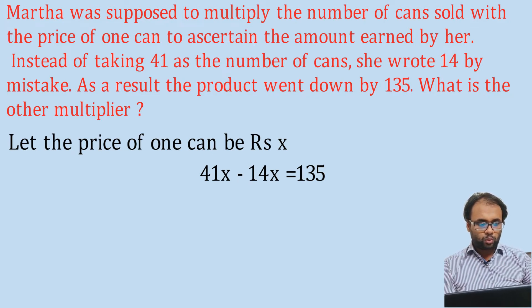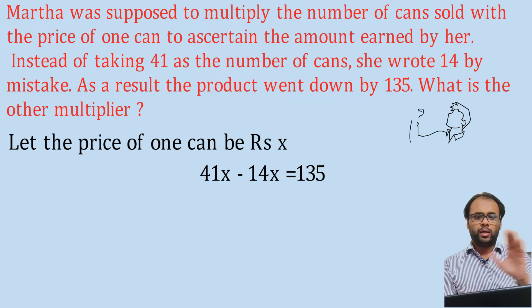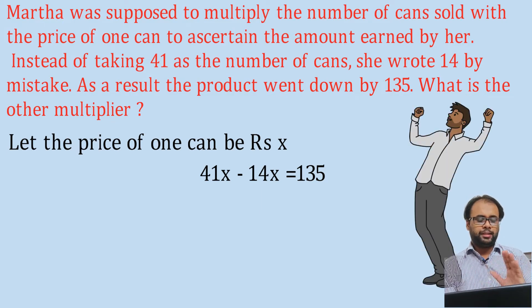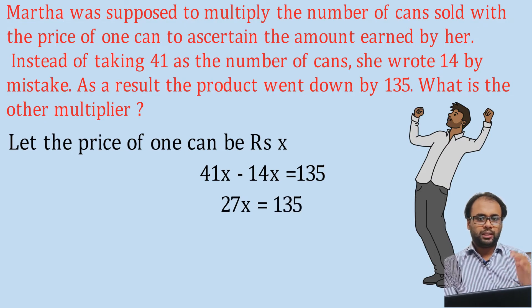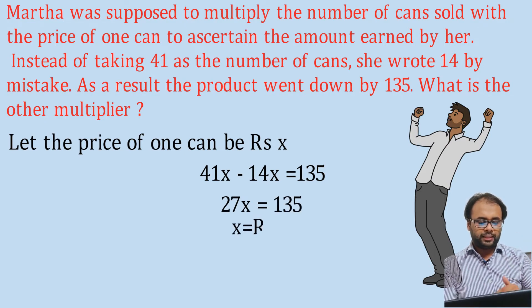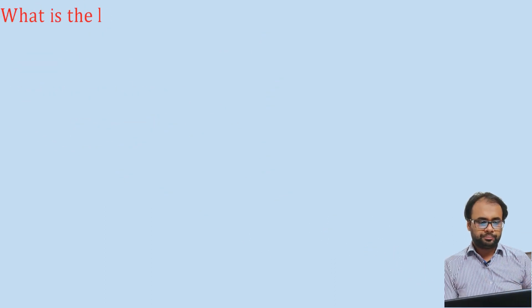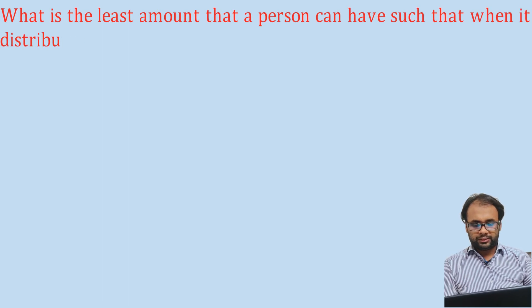Once you write down this equation, the game is won — you have solved the question. 41X minus 14X equals 135, which means 27X equals 135, so X equals rupees 5. This is the price of one can — that is the other multiplier we were asked to find.